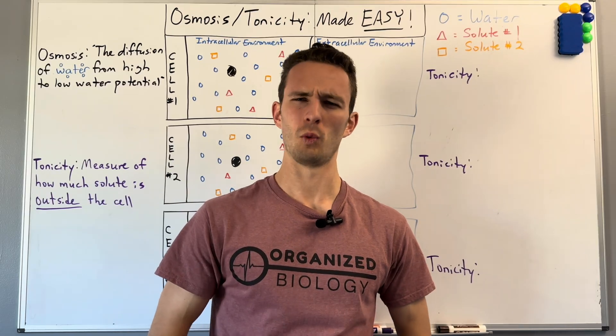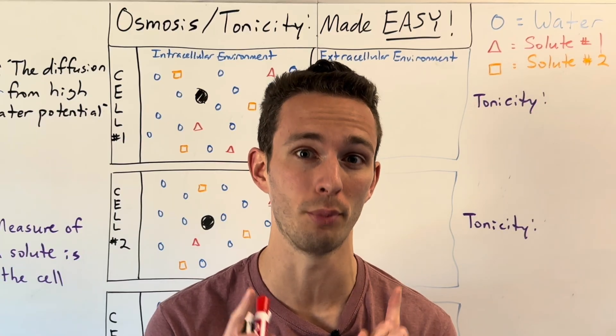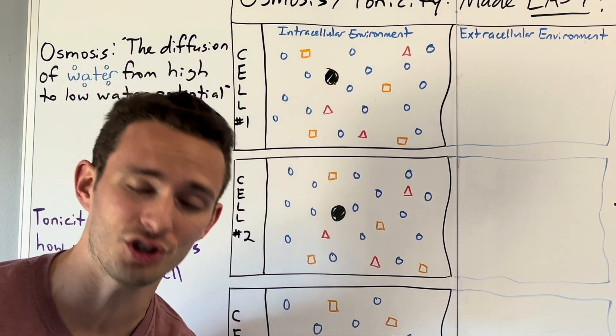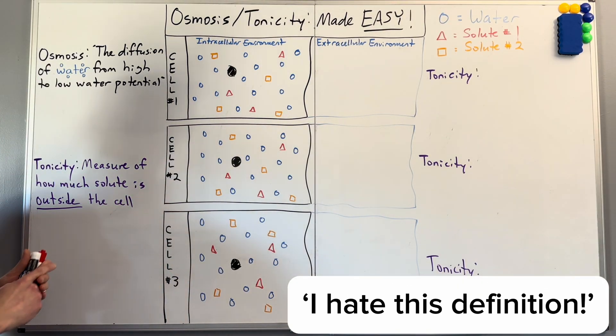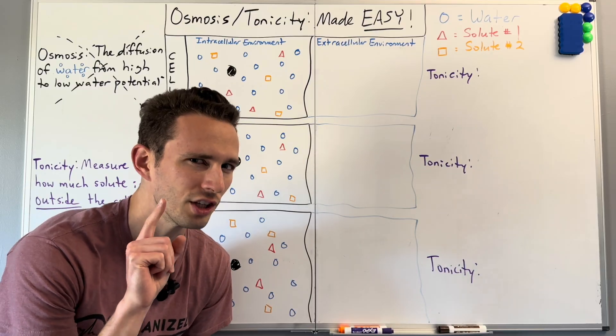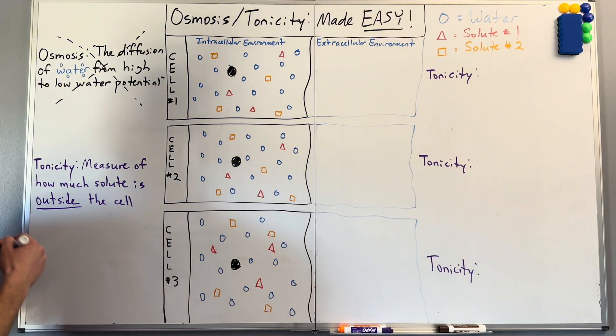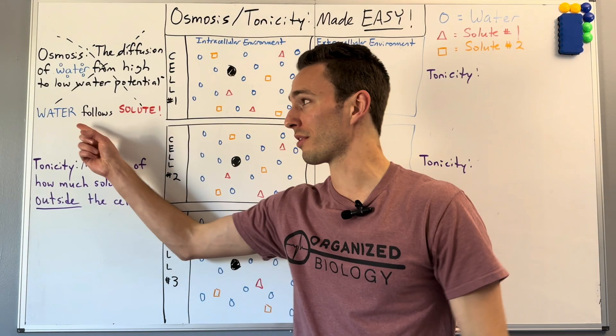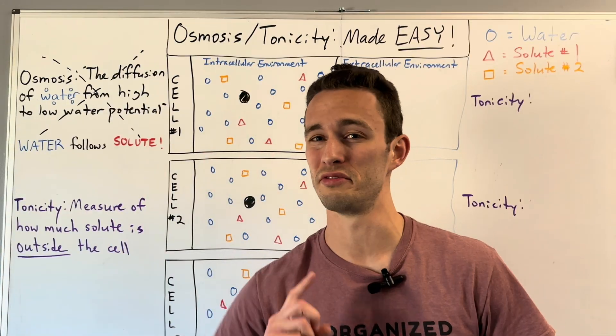Those are two incredibly weird facts, but they both have to do with the importance of osmosis, which is the diffusion of water from high to low water potential, but I hate that definition. Your teachers will probably force you to memorize it, but what I want you to remember is that water follows solute. And if you can remember this, this whole process will be very simple for you.